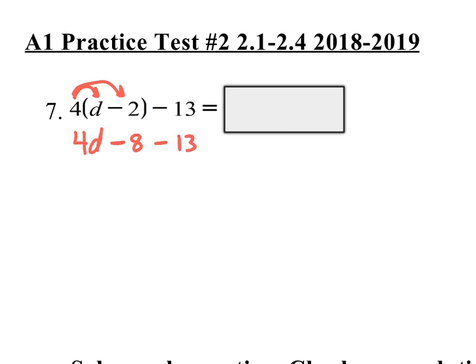Now I'm going to combine like terms. Out of these three terms, are there any terms that are alike that I could combine? Of course, you could combine the numbers with the numbers. If you owe 8 and you owe 13, how much do you owe? You owe 21. So I owe 21 and let me bring down the 4d. So I've simplified the left side.